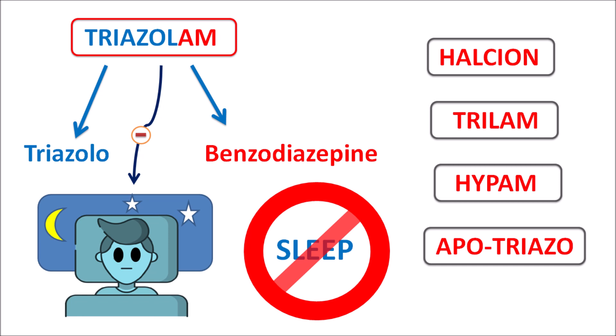Trizolam is only used for acute treatment and is indicated for 7 to 10 days. If insomnia is not managed by trizolam after 10 days, the drug is considered ineffective. So trizolam can be used for the short-term treatment of insomnia, and it is a triazolobenzodiazepine.